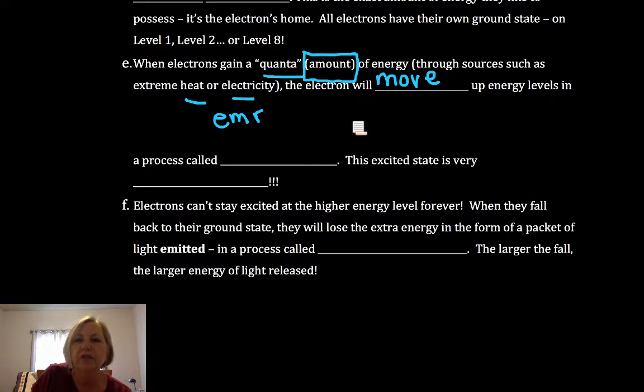The electron will move up in energy levels. It will move further from the nucleus, then it was in its ground state. And this is a process called excitation.